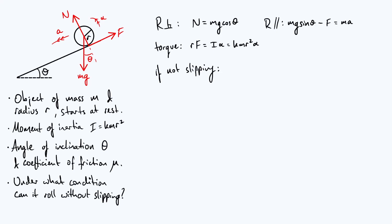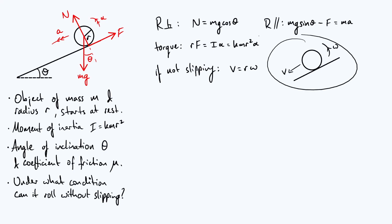So we'll assume for the time being that the object is rolling without slipping. That gives an additional constraint, and we'll use it to solve for the frictional force required for the no-slip condition to be satisfied. Mathematically, the no-slip condition is v equals r omega, where v is the linear speed and omega is the angular velocity about the centre of mass. This comes from requiring that the velocity of the contact point relative to the surface is exactly zero.